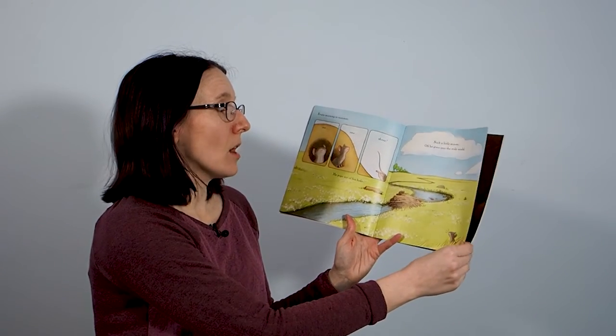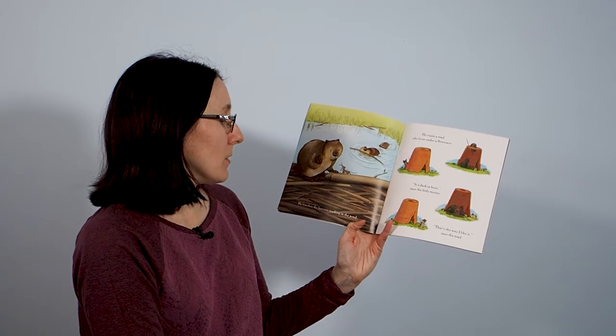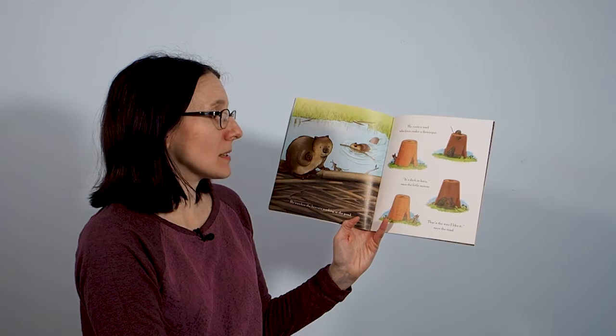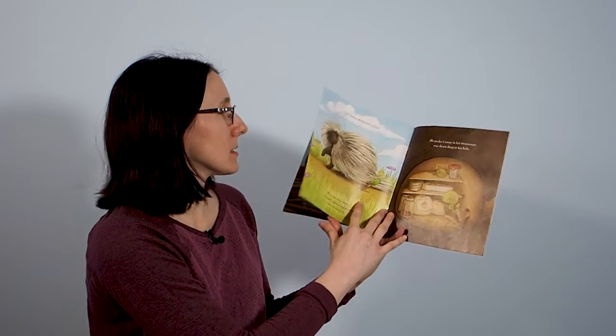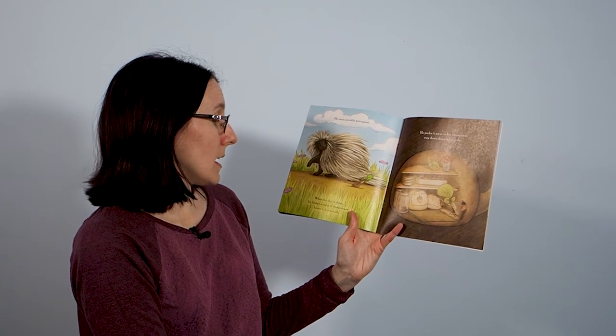Off he goes into the wide world. He watches the beavers working in the pond, he visits the toads who live under a flower pot. It's dark in here, says the little mouse. That's the way I like it, says the toad. He sees a prickly porcupine.